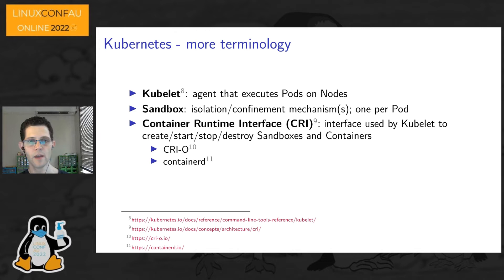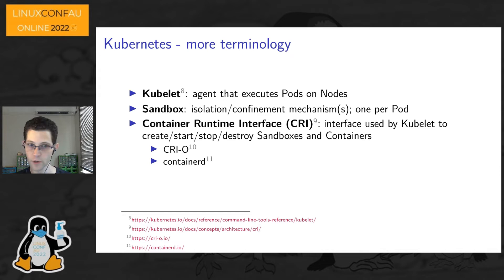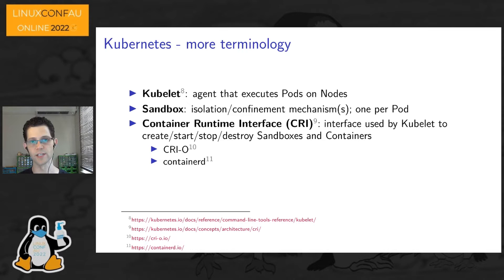On a node, the agent that executes a pod is called kubelet. Kubelet observes the distributed configuration and, if it sees a pod has been scheduled to it or removed, it affects those changes on that node by creating a sandbox. A sandbox is the isolation or confinement mechanism used for a pod — one pod, one sandbox — and all containers for a pod run inside the same sandbox.